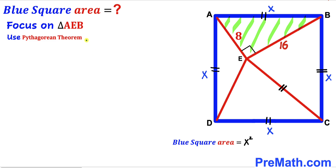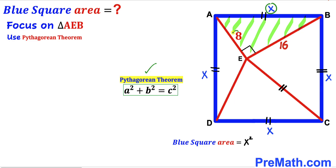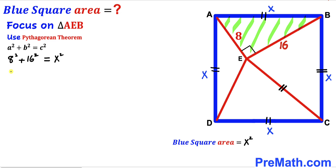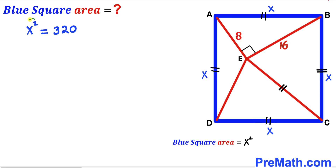Now applying the Pythagorean theorem to right triangle AEB, where the hypotenuse is x and the two legs are 8 and 16: 8 squared plus 16 squared equals x squared. That gives 64 plus 256 equals x squared, so x squared equals 320.